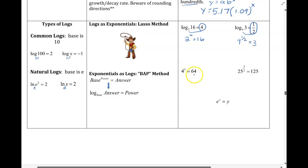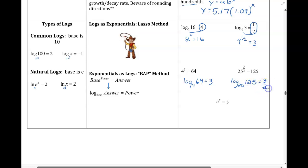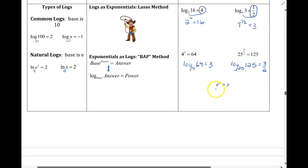When going from exponent form to log form, use the BAP acronym — write our log with our base, of the answer, and it equals the exponent. So we'd have log base 4 of 64 equals the exponent. Same with the next one: log base 25 of 125 is equal to 3 over 2. And the next one, since our base is e, we use the natural log — the natural log of y always equals that exponent of x. If you indicated that base being e for the natural log, it's assumed anyway.